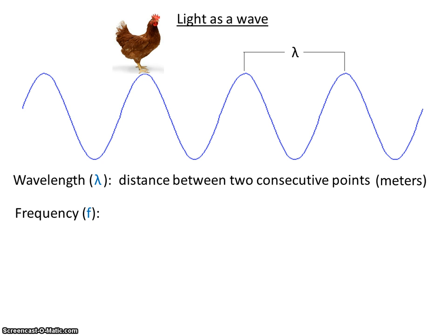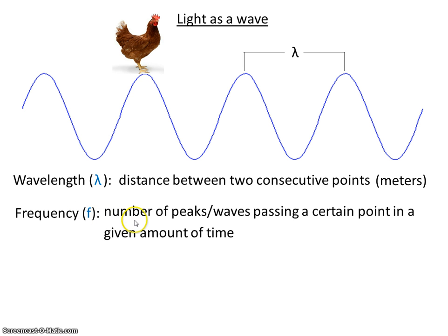So you can think about frequency a couple of ways. Frequency is the number of peaks passing a certain point in a given amount of time. It's usually measured in hertz. The symbol for hertz is Hz, and it's how many times per second. How many waves per second.